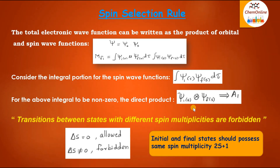So we can say that an electronic transition is allowed only if ΔS equals 0, so that the initial and the final states possess the same spin multiplicity 2S+1. If the spin wave functions are orthogonal, that is if ΔS is not equal to 0, the symmetry of the transition will not be totally symmetric and therefore the transition will be forbidden. And hence, the spin selection rule may be stated as: transitions between states with different spin multiplicities are forbidden.